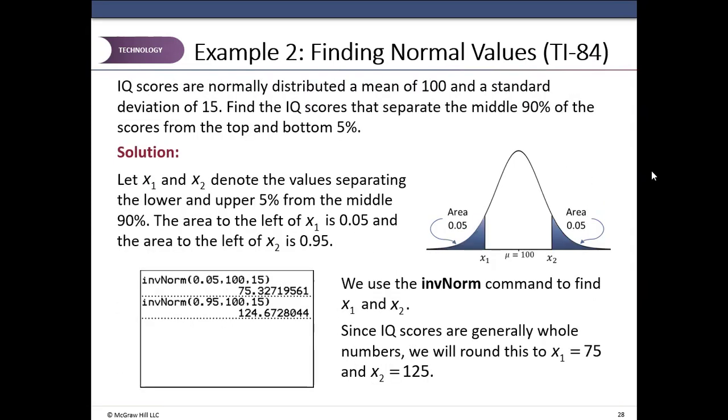So here they want to find out the IQ scores that separate the middle 90 percent of the scores from the top and bottom 5 percent. So area in each tail is 0.05. So they want to find X1 and X2. Again, second vars 3, to find X1, which is the boundary for the left tail. Area in the left tail is 0.05. Mean and standard deviation do not change. Paste, enter and enter, and that score is 75.327.